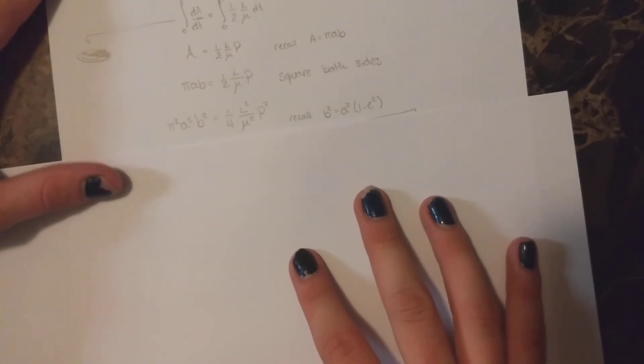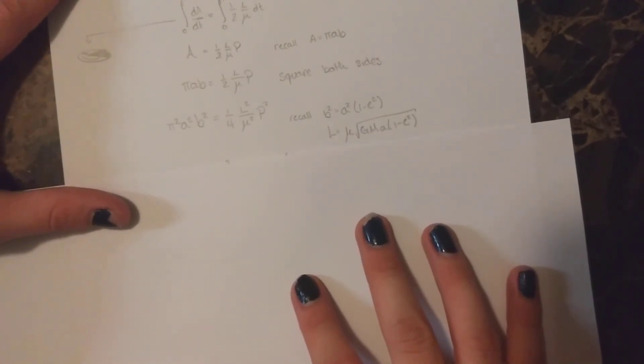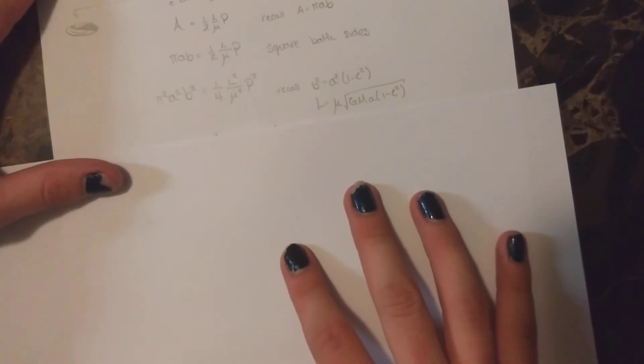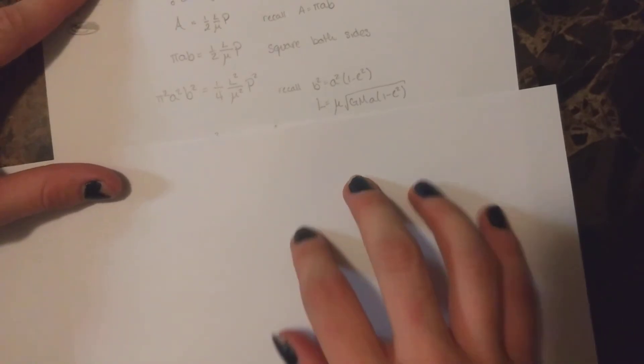And if we remember that b squared is equal to a squared times 1 over e squared. Oh my gosh, I'm saying this all backwards. b squared is equal to a squared times the quantity of 1 minus e squared. And we have the angular momentum here, which I won't try to read to you.